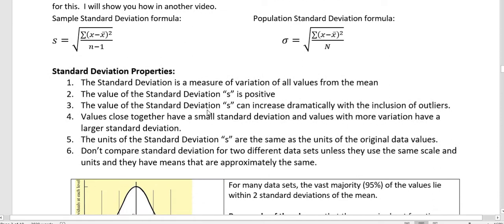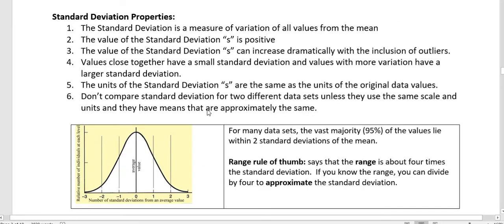Some properties about the standard deviation that I want to talk about. It's a measure of variation of all the values from the mean. The standard deviation is positive. We say it's one standard deviation away. It could mean it's one to the left or one to the right. And the value of the standard deviation can increase dramatically with the inclusion of outliers. And that means that it's not resistant either. So putting an outlier in there can really change the value.